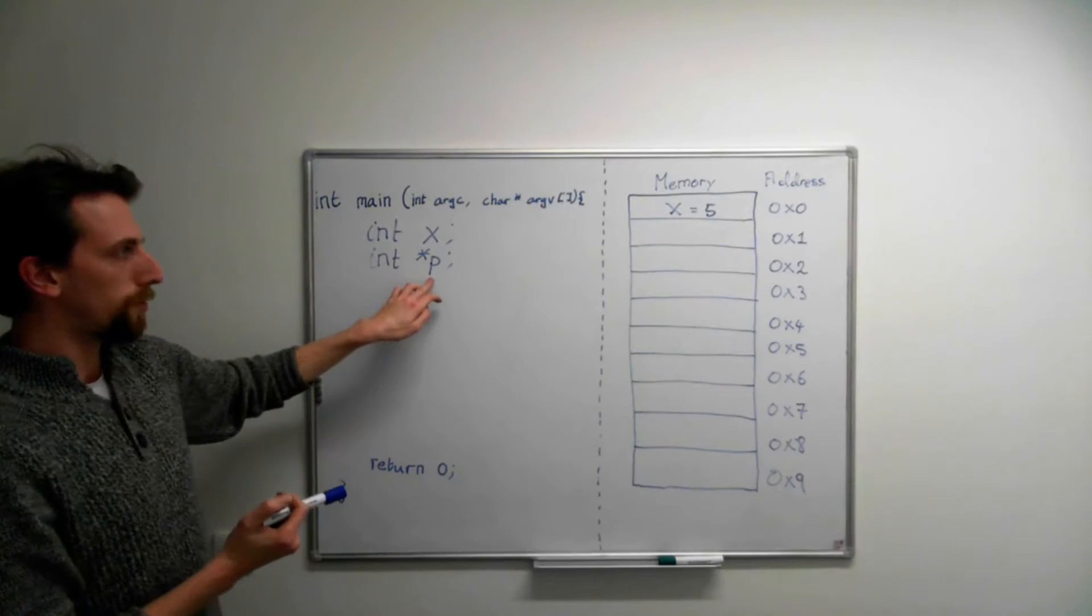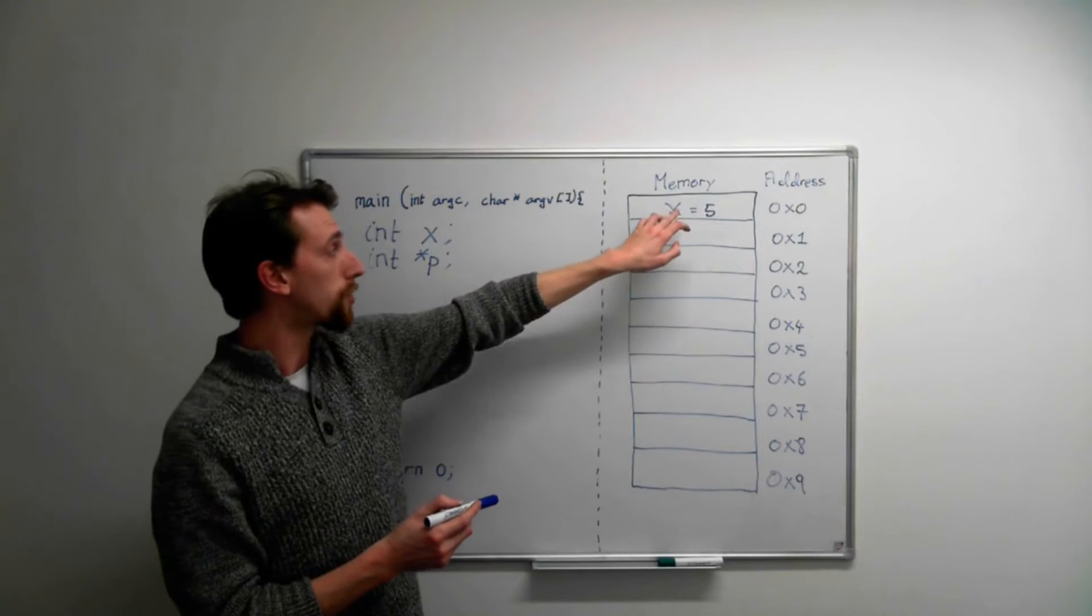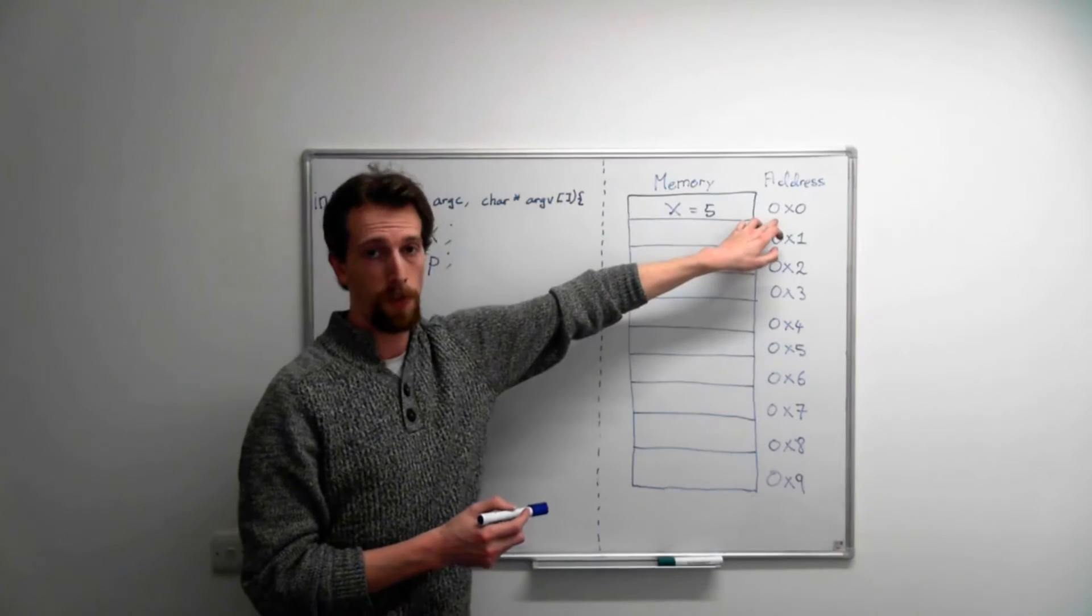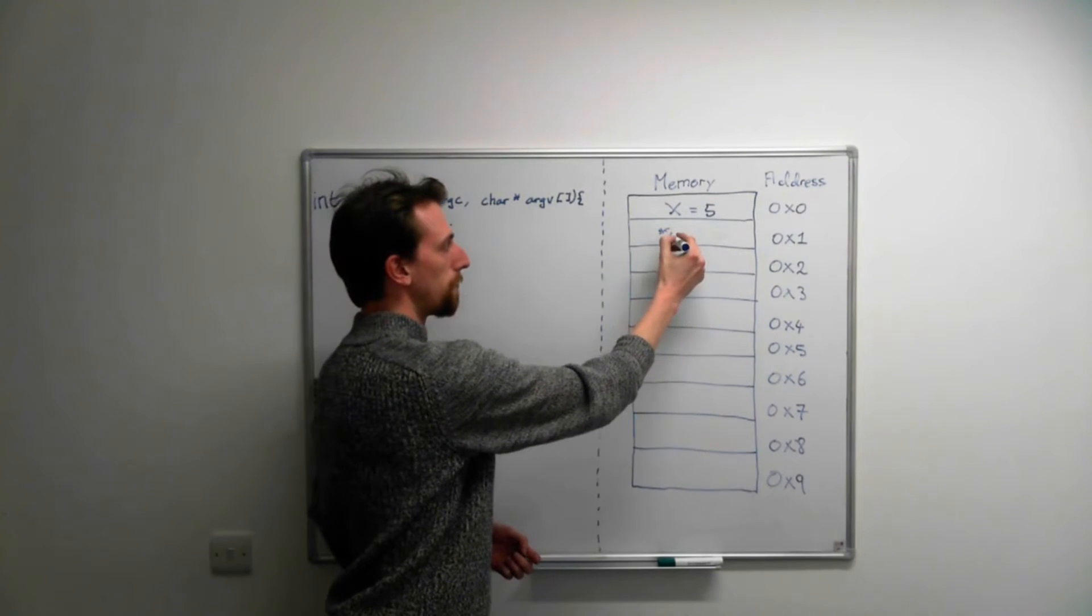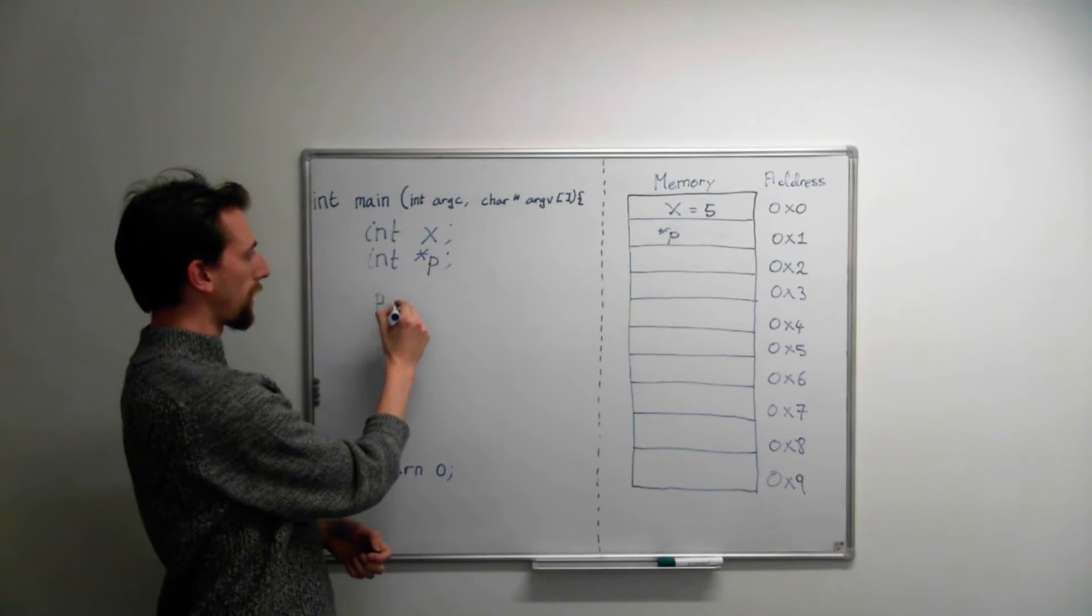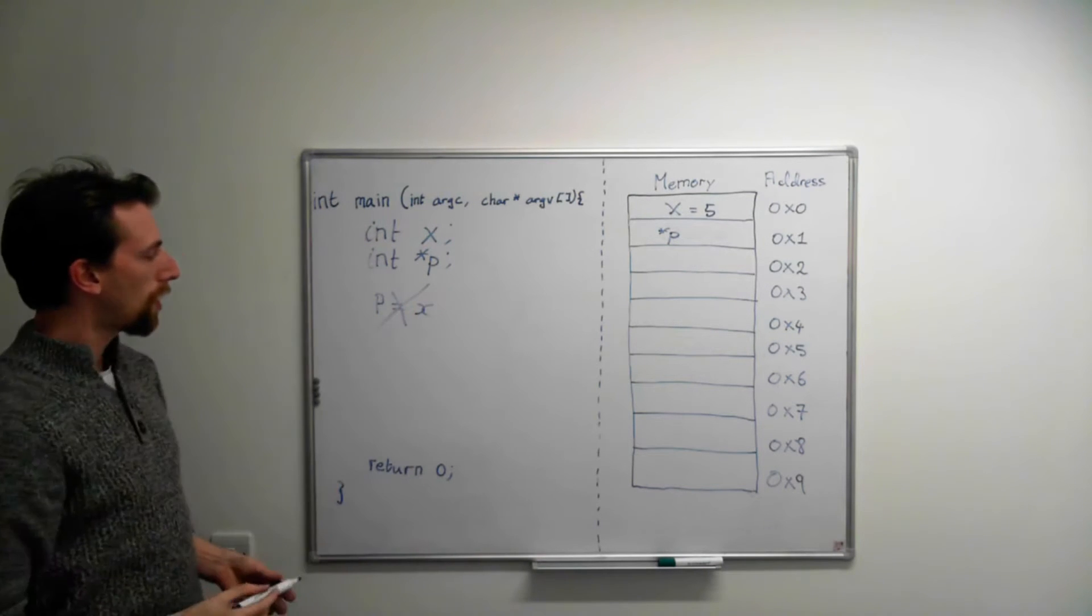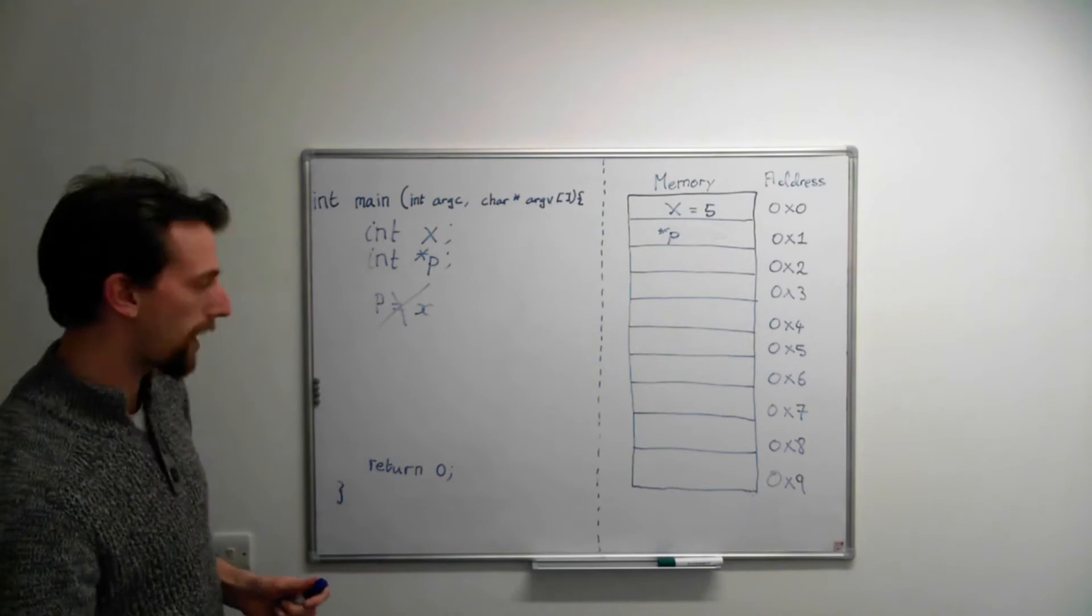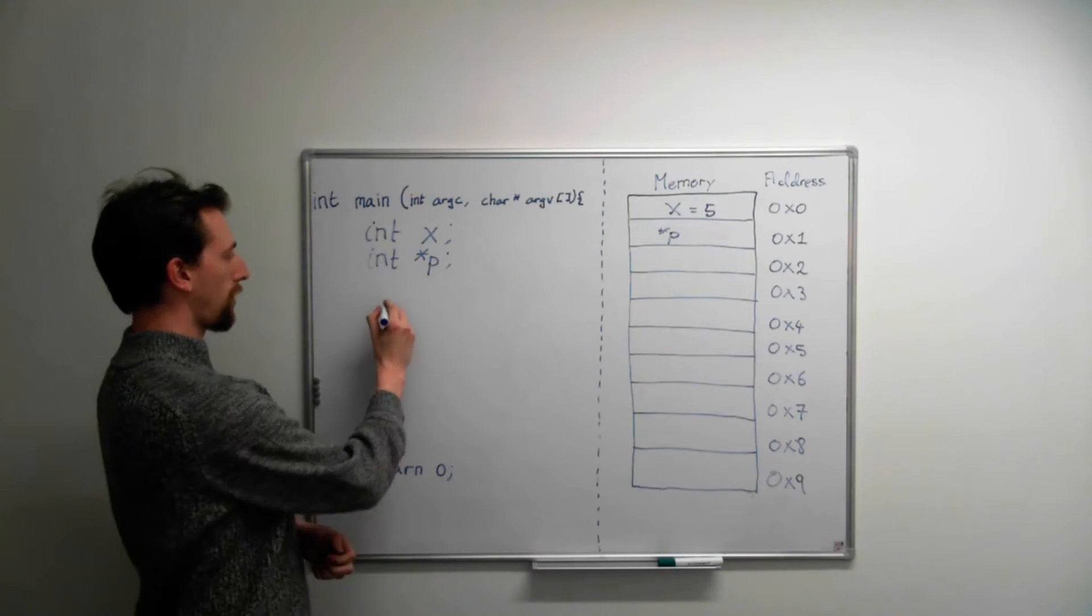When we create a pointer, we're not actually storing a value anymore. We're not storing a value like this anymore. What we're storing is the address of another value. So p still gets some place in memory. This could be p here. But we can't say that p is equal to x, because p is a pointer and x is an integer.